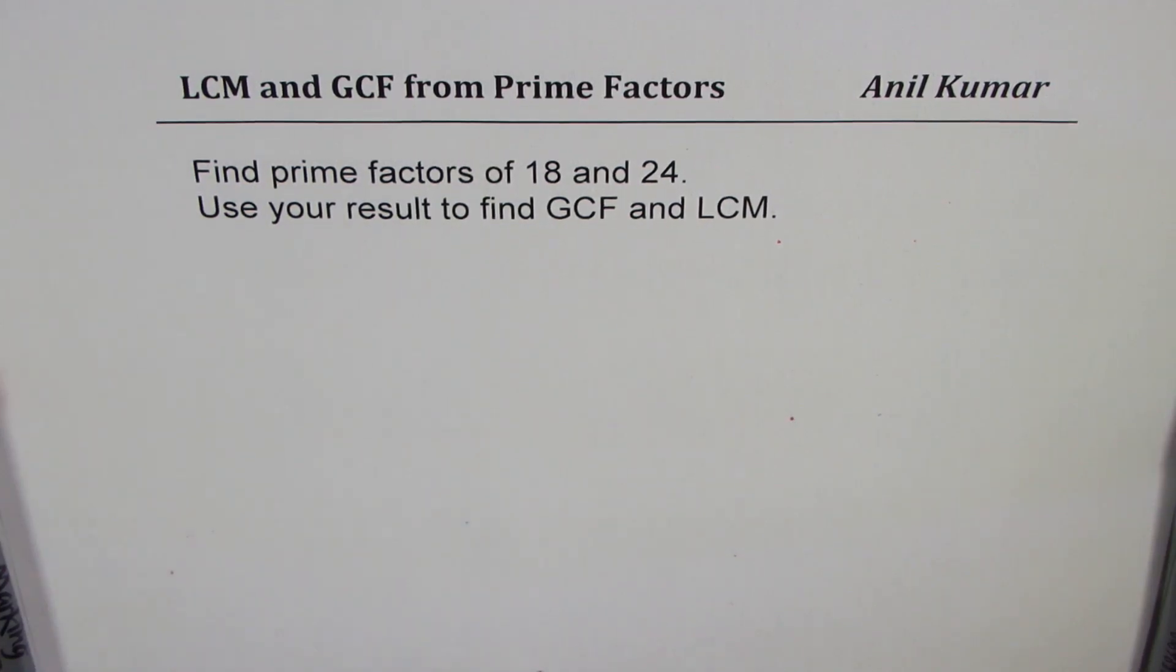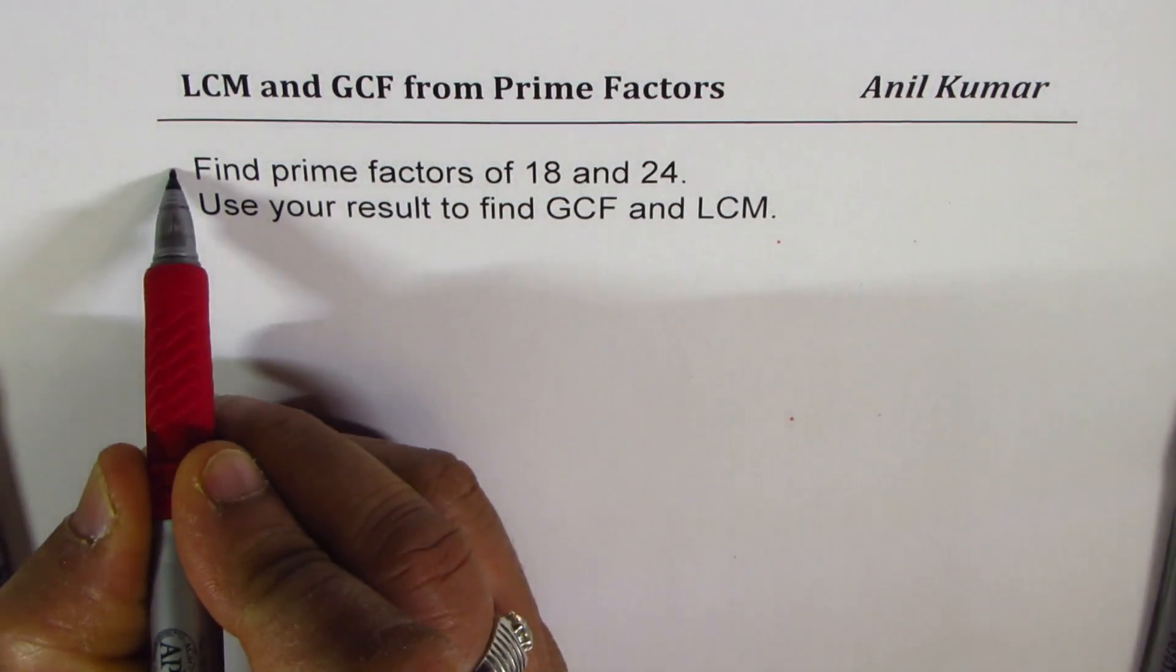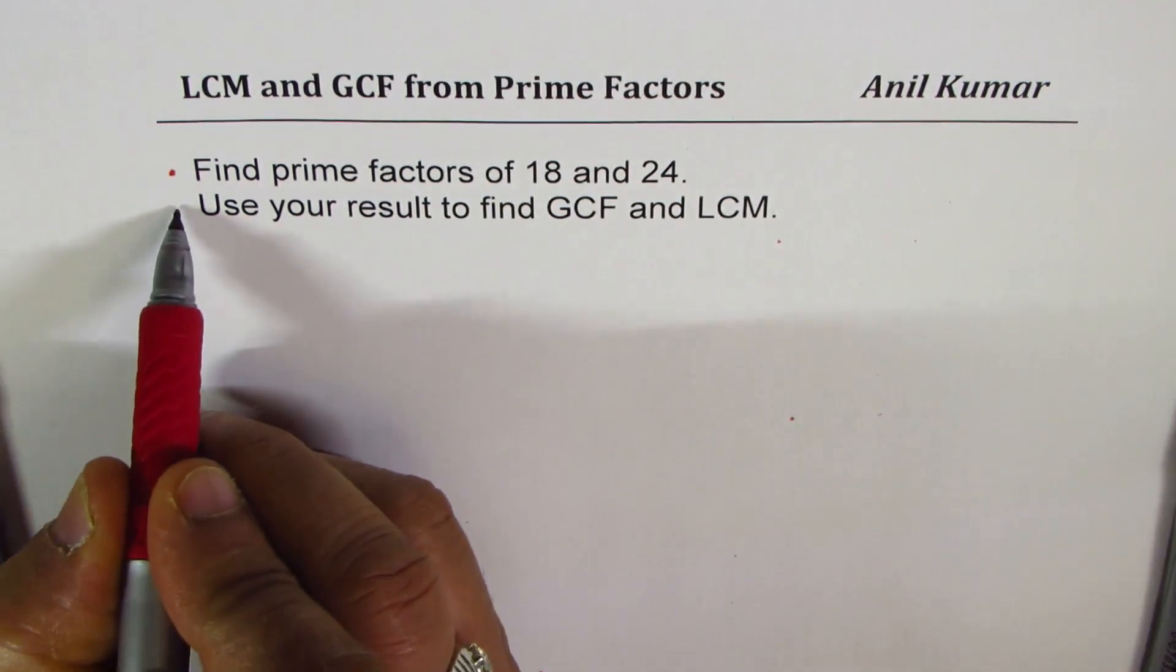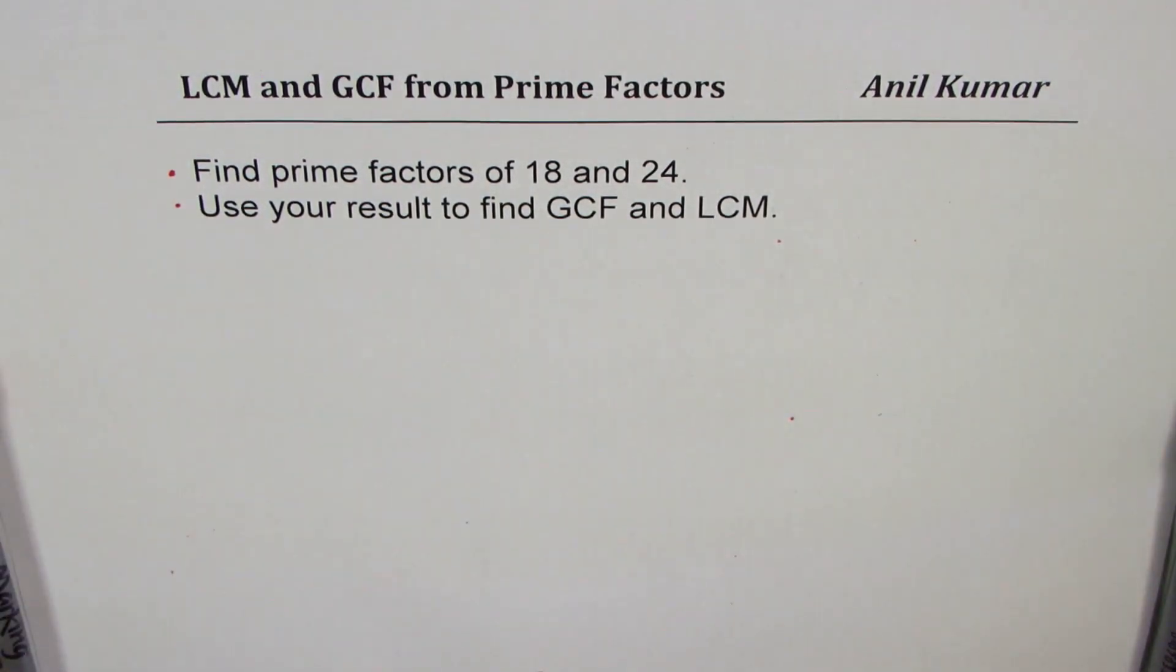I'm Anil Kumar. In this particular video, we will link prime factors with lowest common multiple and greatest common factor. The question here is, find prime factors of 18 and 24 and then use your result to find greatest common factor and lowest common multiple.